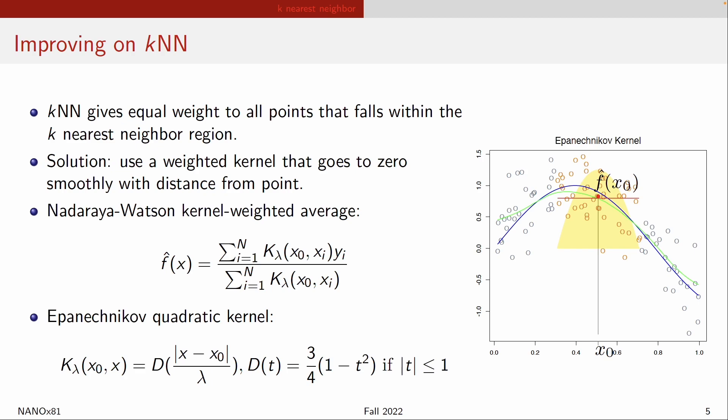There are many different kinds of kernel functions you can use. One is called the Epanechnikov kernel, which has the functional form D of the absolute value of (x minus x0) divided by the width parameter lambda. This function D has the form three-quarters times (1 minus t squared), where t is that normalized distance. In all cases, the key parameter you have to specify is the width of the kernel lambda.